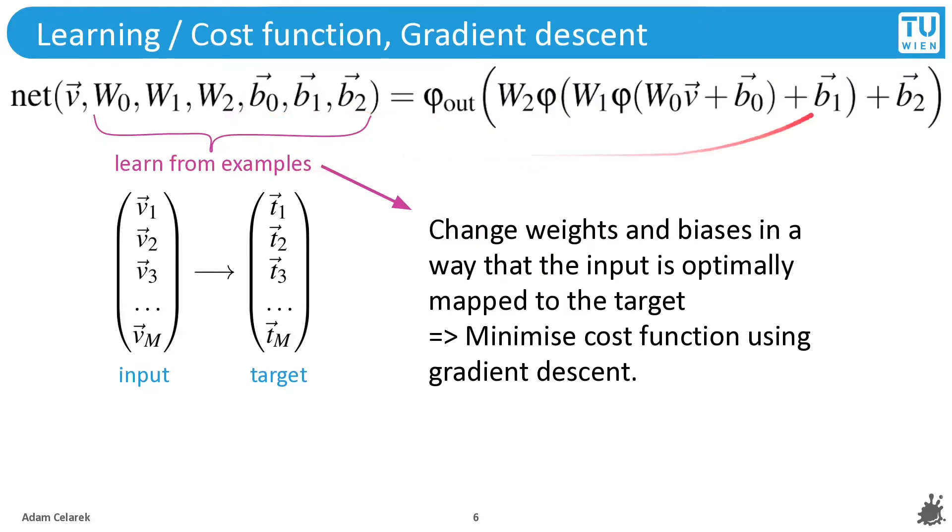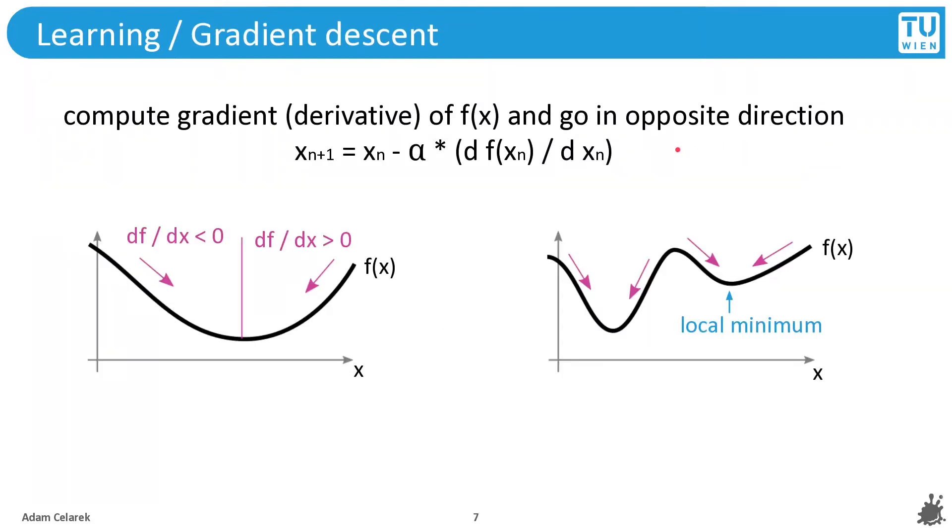Here you can see the same network, but I've put the variables into the signature of the net function. We want to change these weights and biases in a way so that the input optimally maps to the target. We do this optimization by minimizing a cost function using gradient descent.